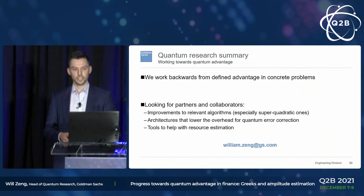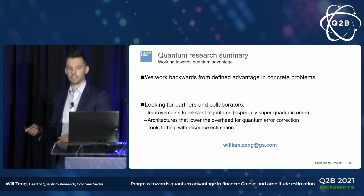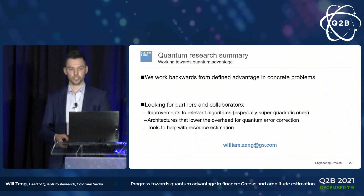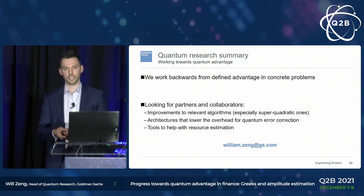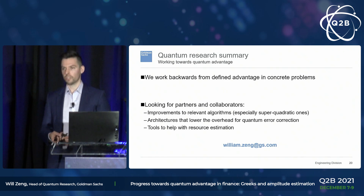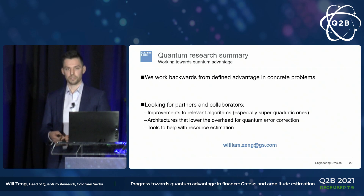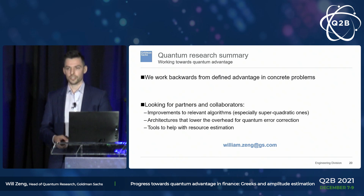To summarize, we're working backwards to find defined quantum advantage in concrete financial problems. We're optimistic about results we can't yet prove, and we're looking for partners and collaborators — particularly on improvements to relevant algorithms, especially super-quadratic ones, alternative architectures with lower error correction overhead, and better resource estimation tools. Better tools would let us produce better hardware targets for everyone in the field to work towards.